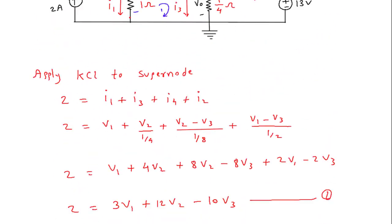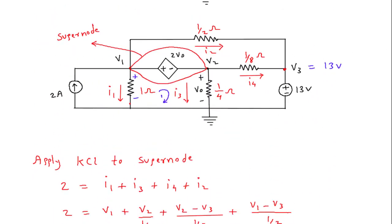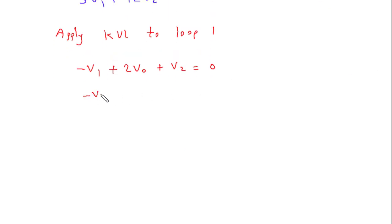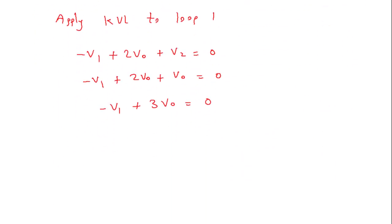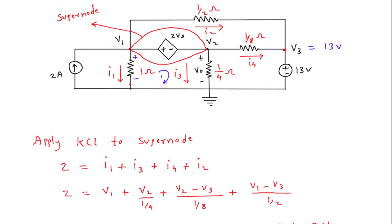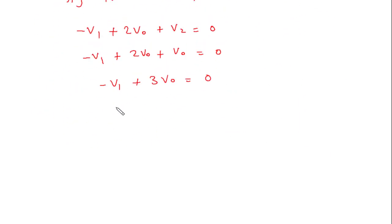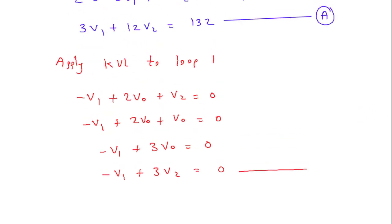So this will be minus V1 plus 2Vo plus Vo is equal to 0. This will be minus V1 plus 3Vo is equal to 0. Or we can write it in V2 form, so this equation will be minus V1 plus 3V2 is equal to 0. Let's say this is equation number B.